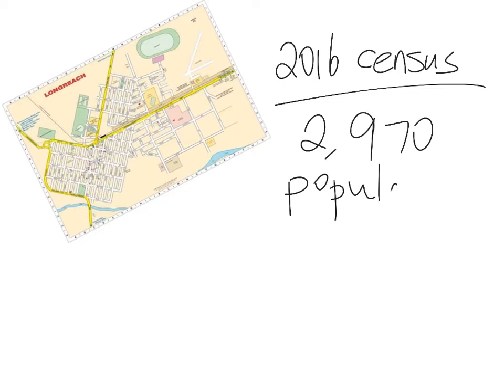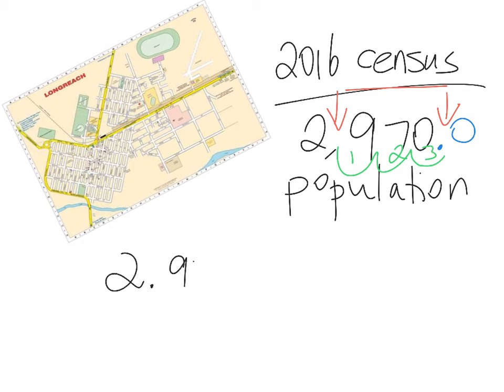Okay, so how do you think we would have a scientific notation for this? So remember we put in a decimal point here and a zero, and we want to move this decimal place to here. So it's 1, 2, 3. Three spots. So this is the answer. So it's 2.97 multiplied by 10, because it's decimal places, and it's to the power of 3.